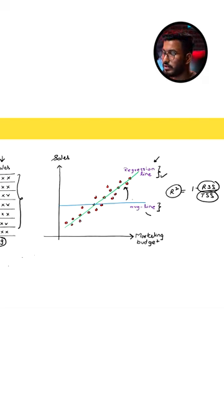So R-square tells you about the improvement in prediction, how well your regression line is able to perform over and above the average line.